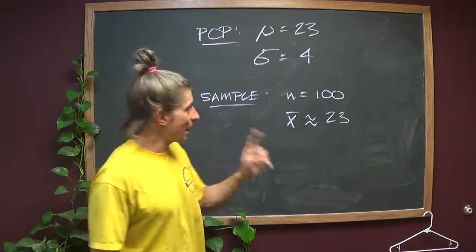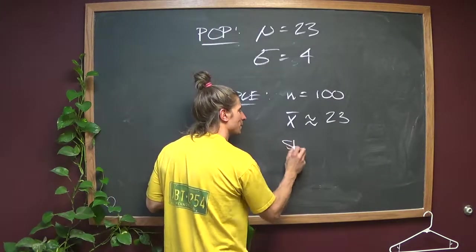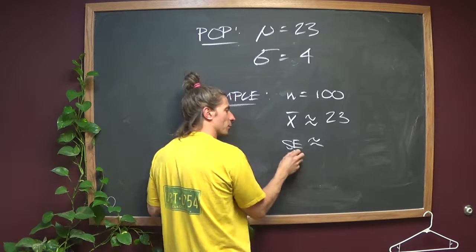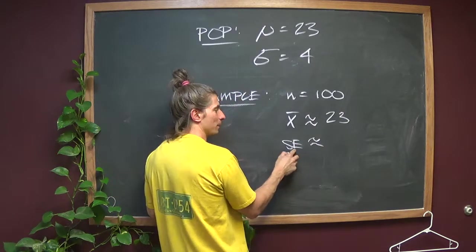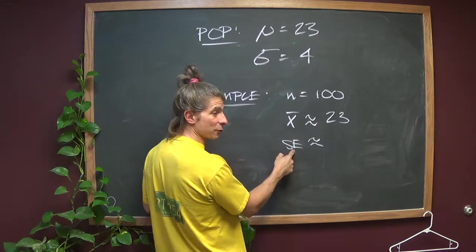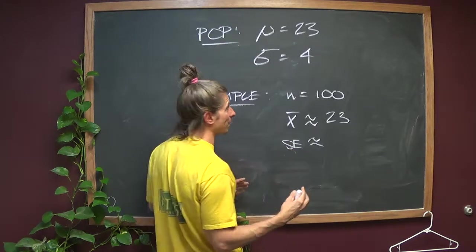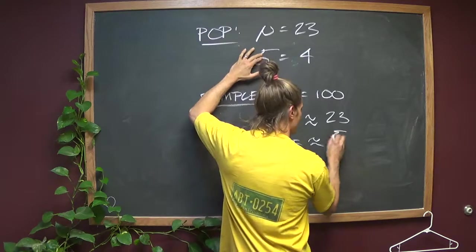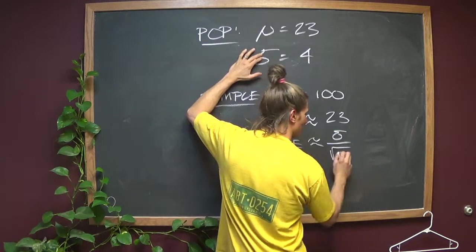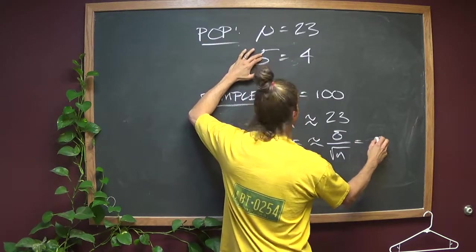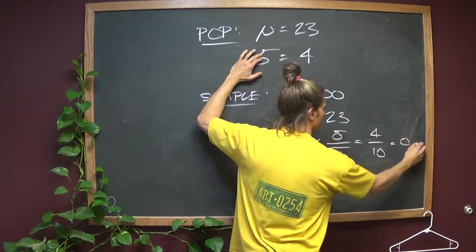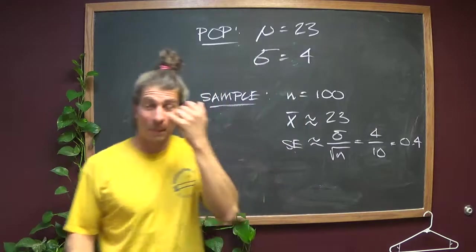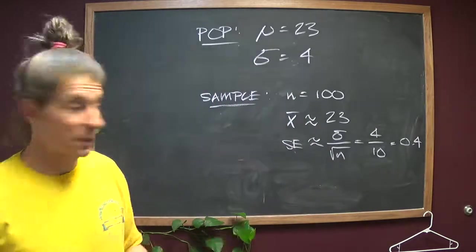The kicker is, if that's the average, what's the standard error, which is the inferential measure of the sample standard deviation? Well, we discovered back in 243, in that last two days we were together, that it's equal to the population standard deviation divided by the square root of the sample size. So in this case, it's 4 over 10, or 0.4, which is fantastic.